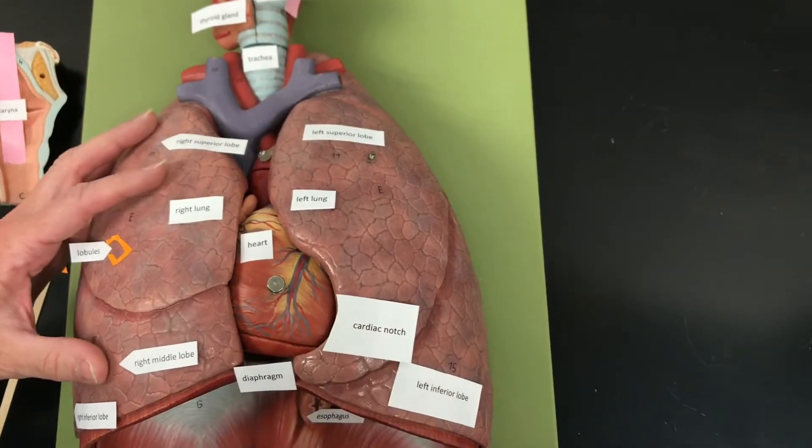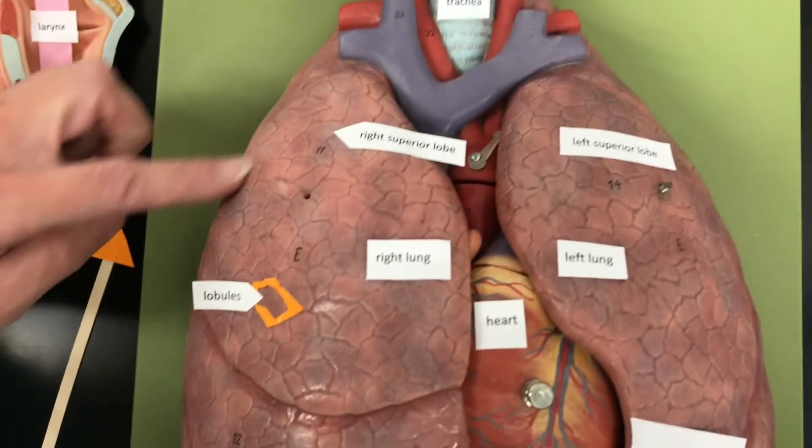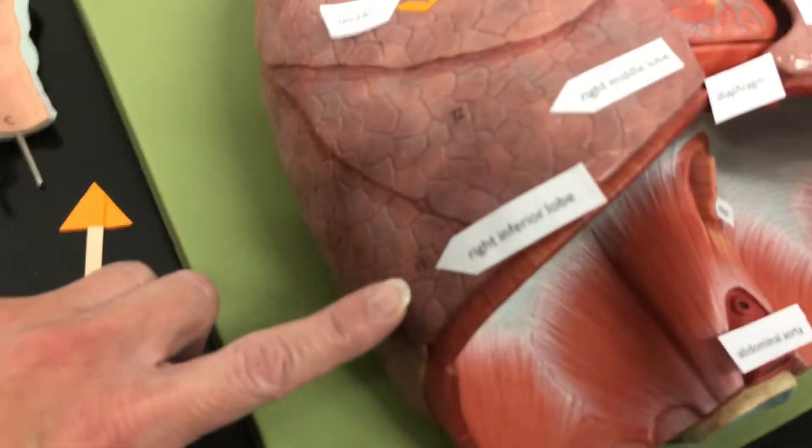So this is the right lung. We have three lobes. So we have the right superior lobe, the right middle lobe, and then the right inferior lobe.